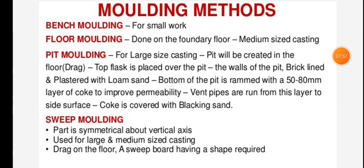Molding methods: bench molding is used for small work. Floor molding is done on the foundry floor for medium size castings. Pit molding is used for large size castings, where a pit is created in the floor. The top flask is placed over the pit, and the walls of the pit are brick-lined and plastered with loam sand. The bottom of the pit is rammed with a 50 to 80 mm layer of coke to improve permeability, and pipes are run from this layer to the side surface. The coke is covered with blacking sand.